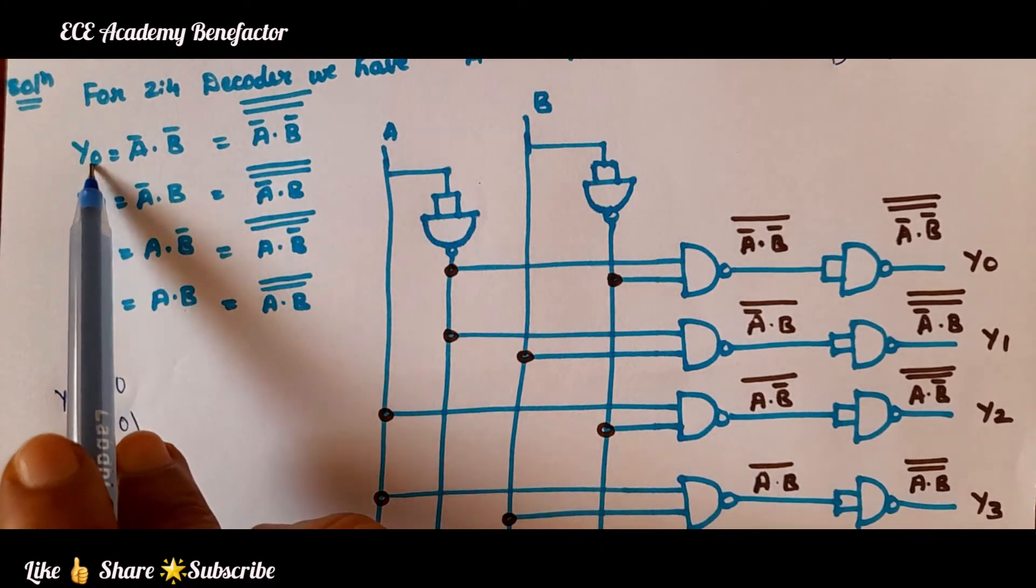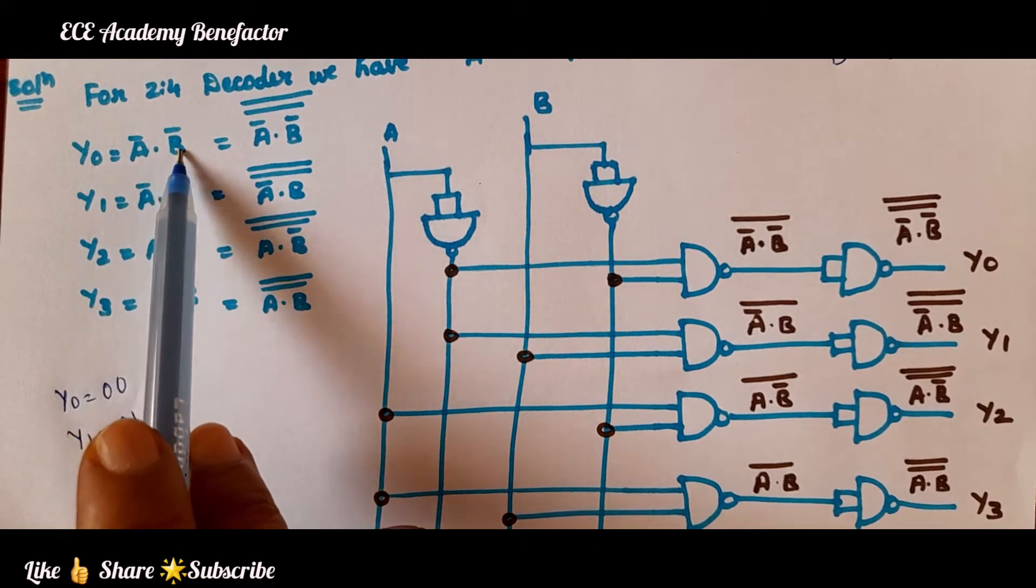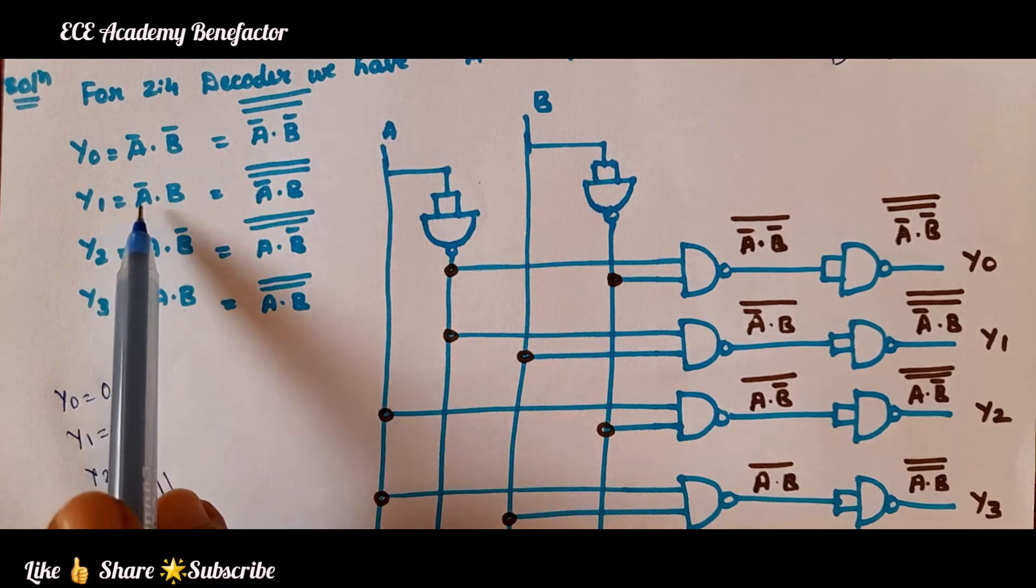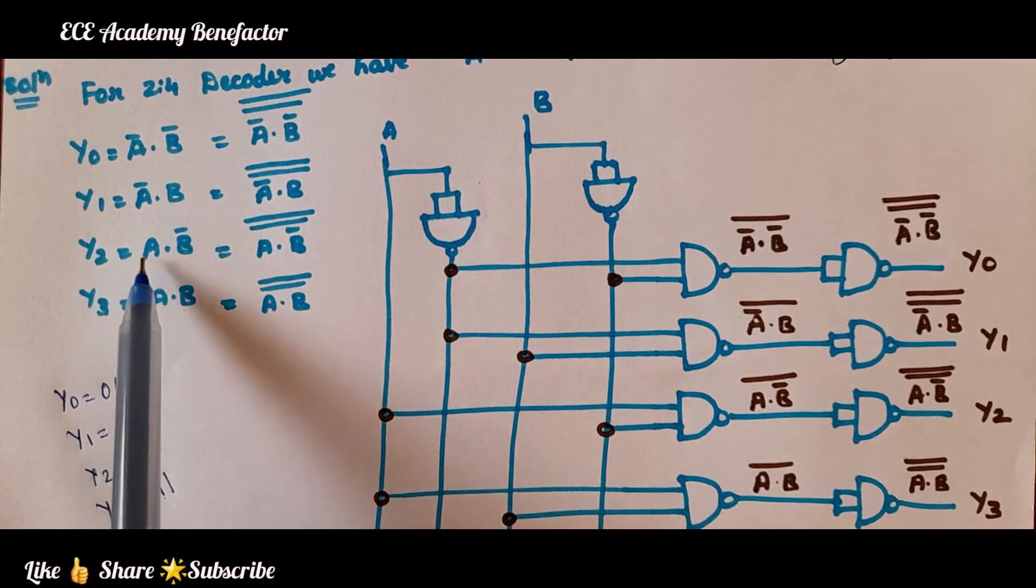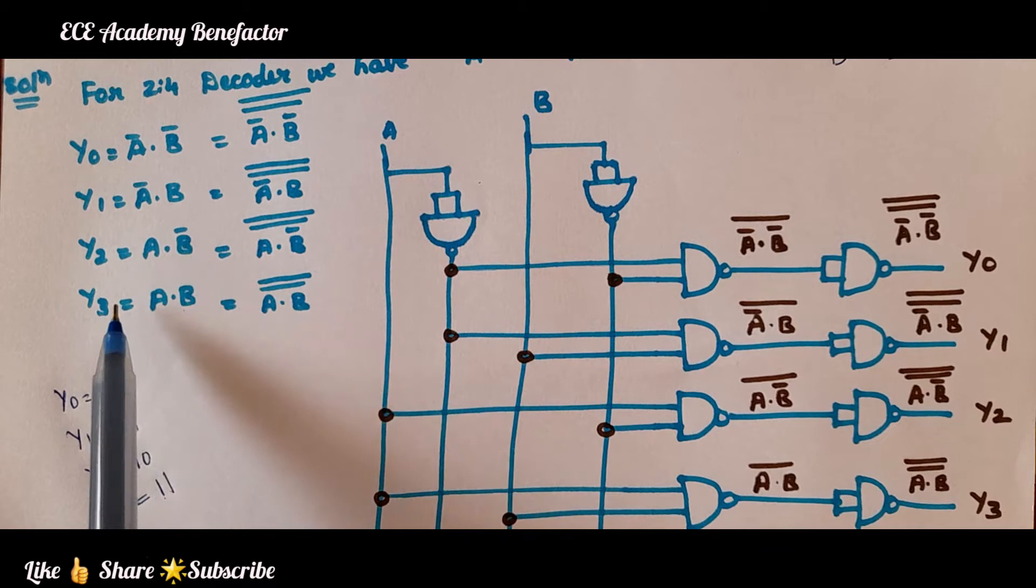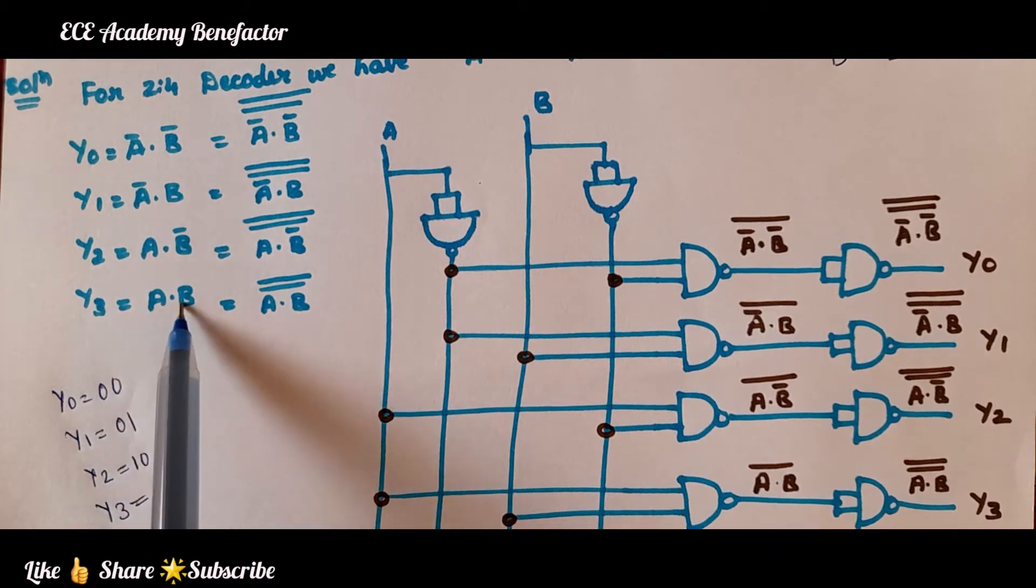We are having these equations: y0 equals A̅·B̅, y1 equals A̅·B, y2 equals A·B̅, y3 equals A·B.